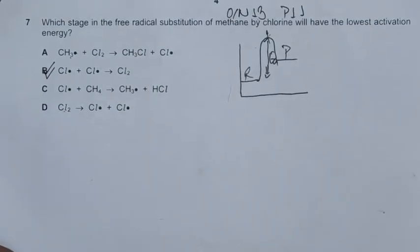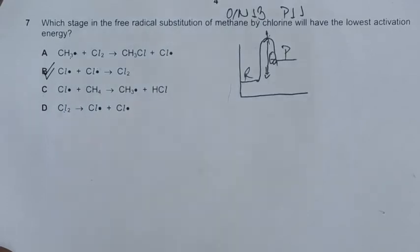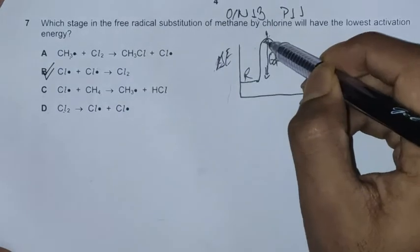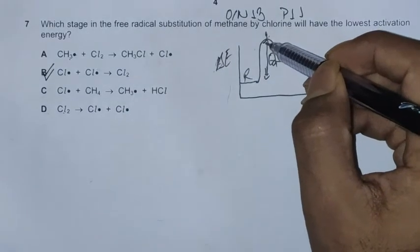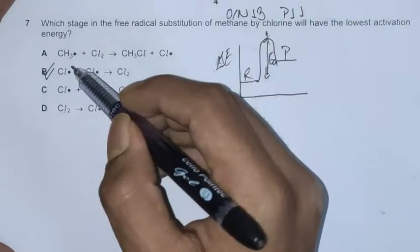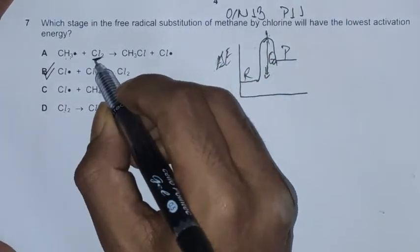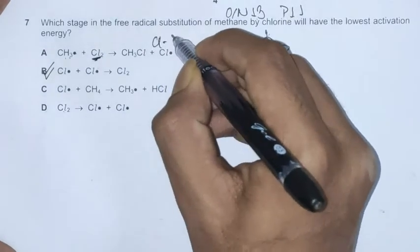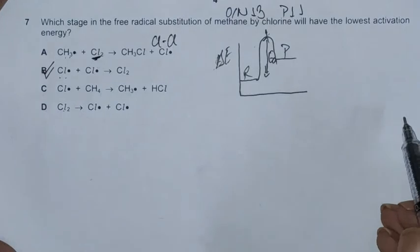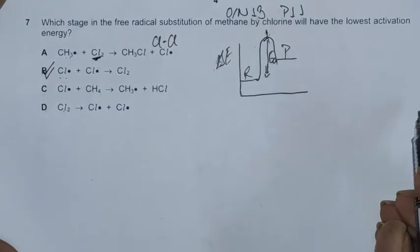The more bonds we have to break, the more endothermic the reaction becomes, and in the energy diagram, the higher the activation energy barrier goes. In option A, we have to break the Cl2 bond. In option B, we have no bonds to break, so the reaction proceeds with ease.